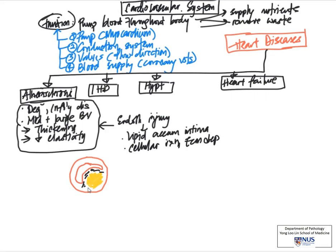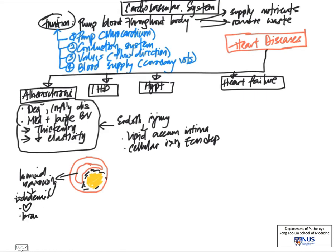On histology, we would see that there are lots of cholesterol clefts in this lipid-rich area together with foam cells, with a more cellular proliferation over it, which is a fibrous cap. So the lumen is often narrowed, and this results in decreased blood flow going to the organ being supplied, which means there is ischemia in that organ.